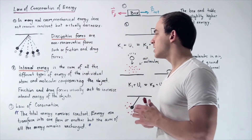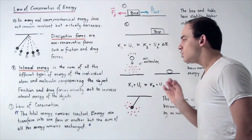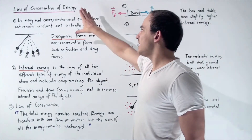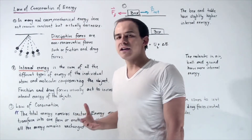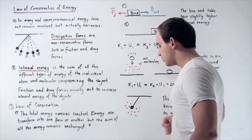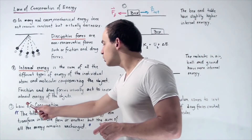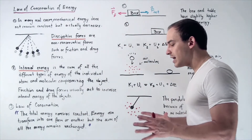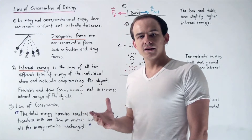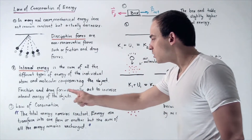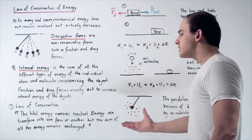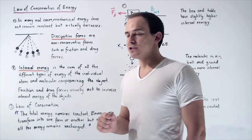What dissipated forces such as friction and drag force do is they usually increase the internal energy of the objects. That's exactly why we have a decrease in mechanical energy — because some of that mechanical energy is transformed into internal energy. The law of conservation of energy states that the total amount of energy, including the internal energy of our system, will be conserved. The total energy remains constant; energy can transform from one form to another, but the sum of all the energy remains unchanged.